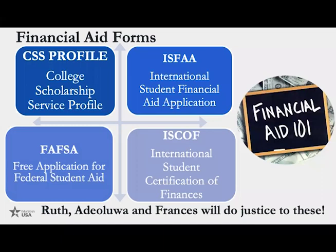Financial aid forms: there are four basic types, though different schools may have school-specific forms. The most popular is the CSS Profile, which stands for College Scholarship Service, administered by College Board — the same organization that handles the SAT. It's an online form. The ISFAA — International Student Financial Aid Application — is an alternative paper form to the CSS Profile, applicable only to international students. You can submit it if you can't pay the CSS Profile fee. I submitted my ISFAA to Tufts, Stanford, Yale, Johns Hopkins, and they all accepted it and gave me my financial aid package.